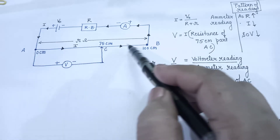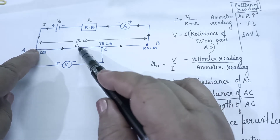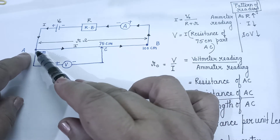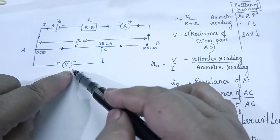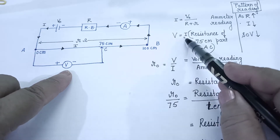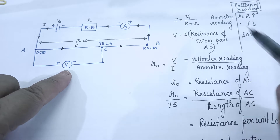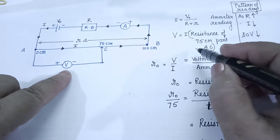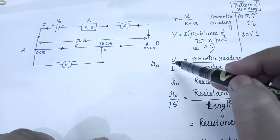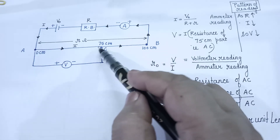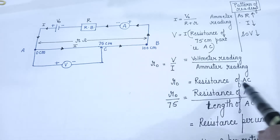If current I is flowing through this AB wire, then the potential difference developed across AC will be I into the resistance of wire AC. So I into the resistance of wire AC is actually the voltmeter reading. The voltmeter reading is current into the resistance of the 75 centimeter part — that is the resistance of AC. So V upon I, voltmeter reading divided by current through AC, will give you the resistance of AC wire.